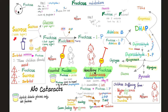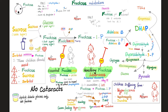Quick review of fructose metabolism: sucrose, the disaccharide commonly called table sugar, is broken down by sucrase into glucose — commonly called grape sugar — and fructose, commonly called fruit sugar or honey sugar. Fructose is then phosphorylated by fructokinase at carbon number one, becoming fructose-1-phosphate. This traps fructose inside the cell, because the cell membrane will not let fructose-1-phosphate back out.